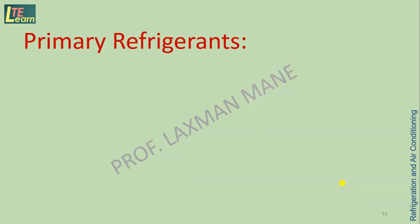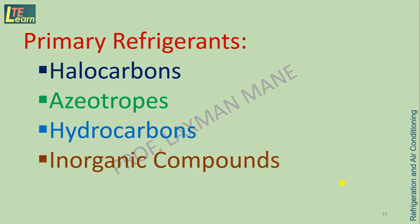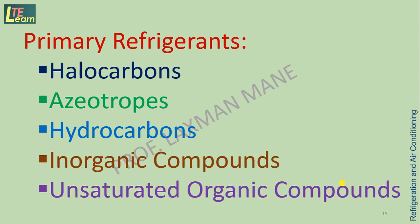Primary refrigerants are classified as halocarbons, azeotropes, hydrocarbons, inorganic compounds, and unsaturated organic compounds.